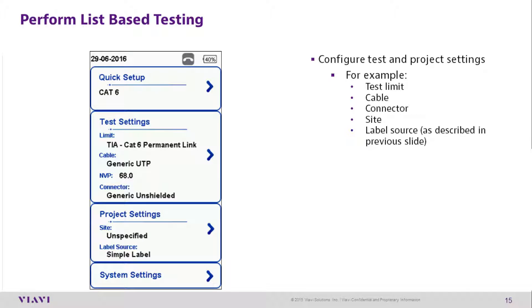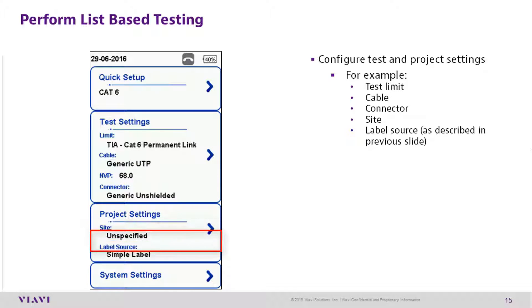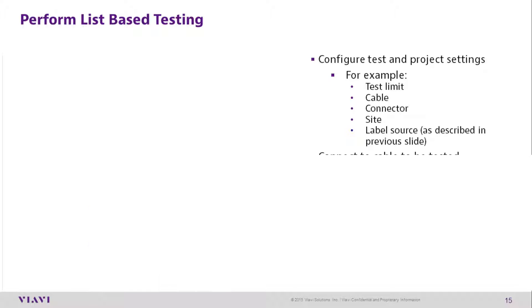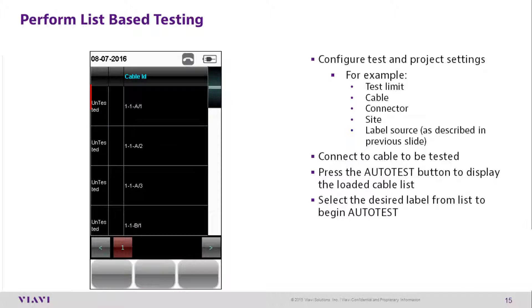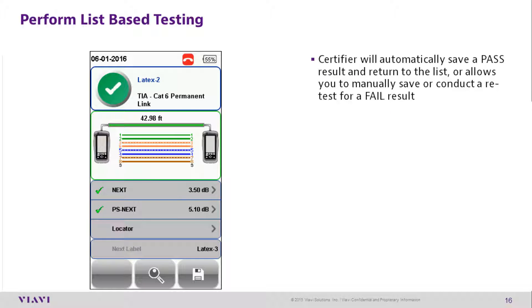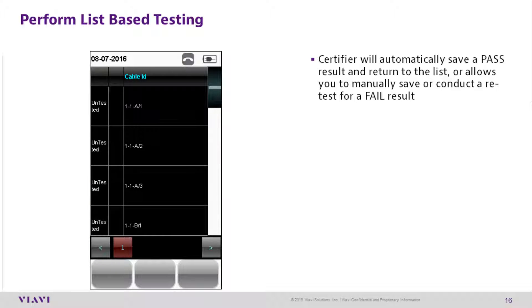To perform list-based testing, configure the test in Project Settings — for example, set the test limit, the cable and connector being used, the site, and the label source. Connect to the cable to be tested and press the Auto Test button to display the loaded cable list. Select the desired label from the list to begin auto-test. The certifier will automatically save passing results and return to the list, or allows you to manually save or conduct a retest of failed results.